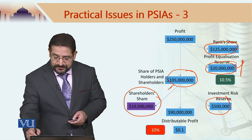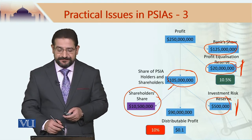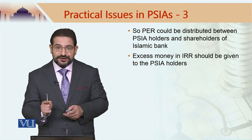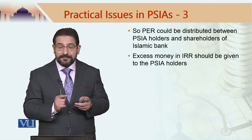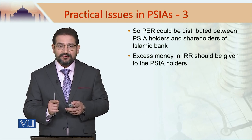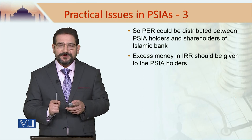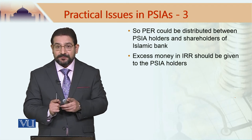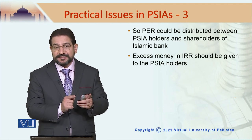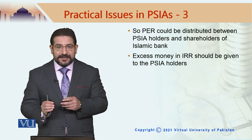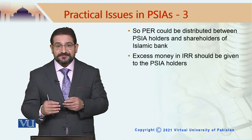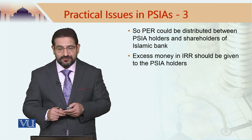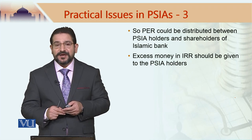Now the question is: who owns the money in these reserves? The money in the profit equalization reserve would be shared between the bank's shareholders and the profit-sharing investment account holders in accordance with their share in the investment pool — 90 percent by the profit-sharing investment account holders and 10 percent by the shareholders of the bank. The money going into the investment risk reserve comes solely from the share of the profit-sharing investment account holders; hence they would own this money exclusively.